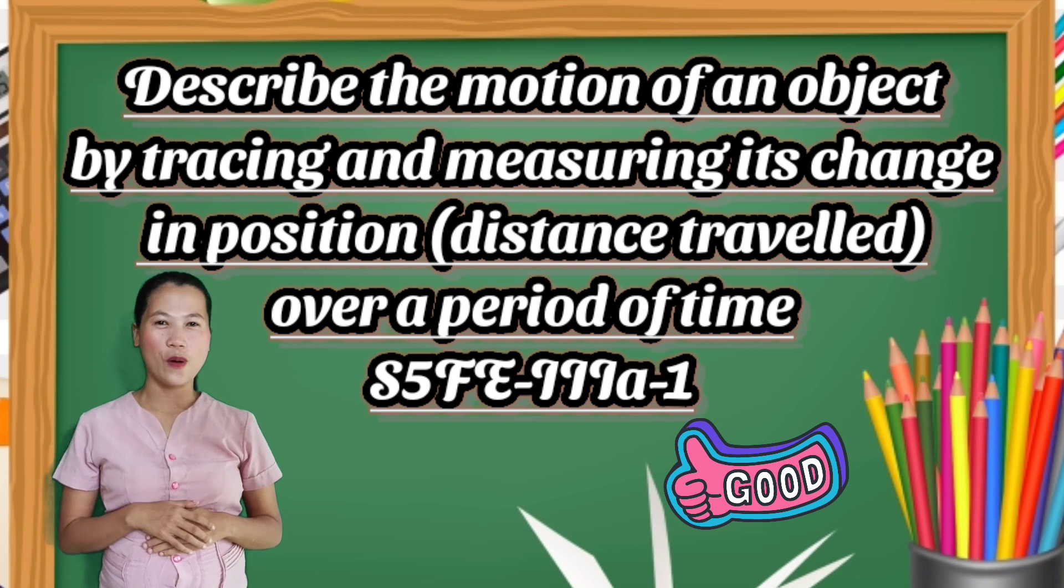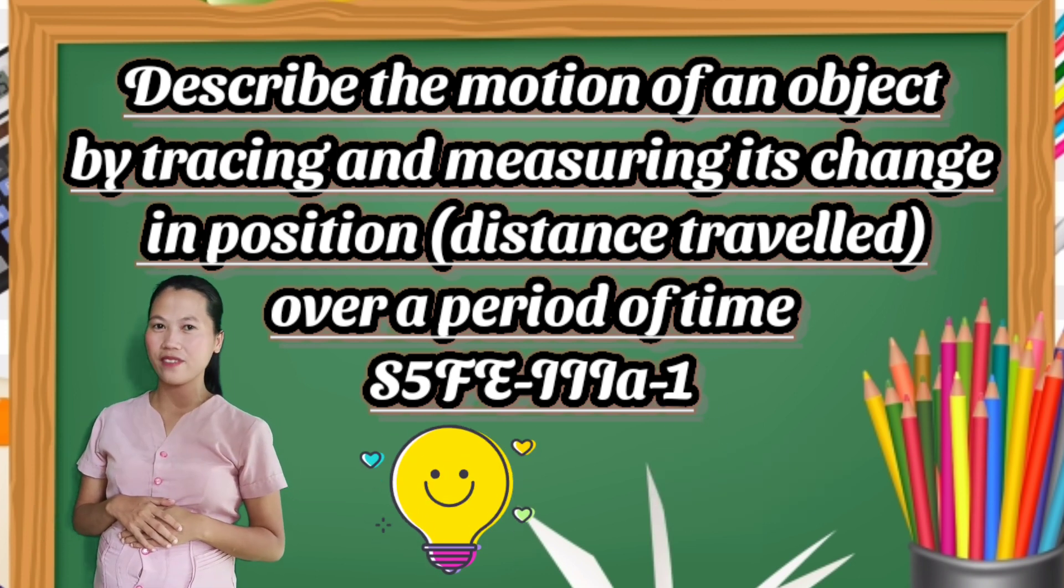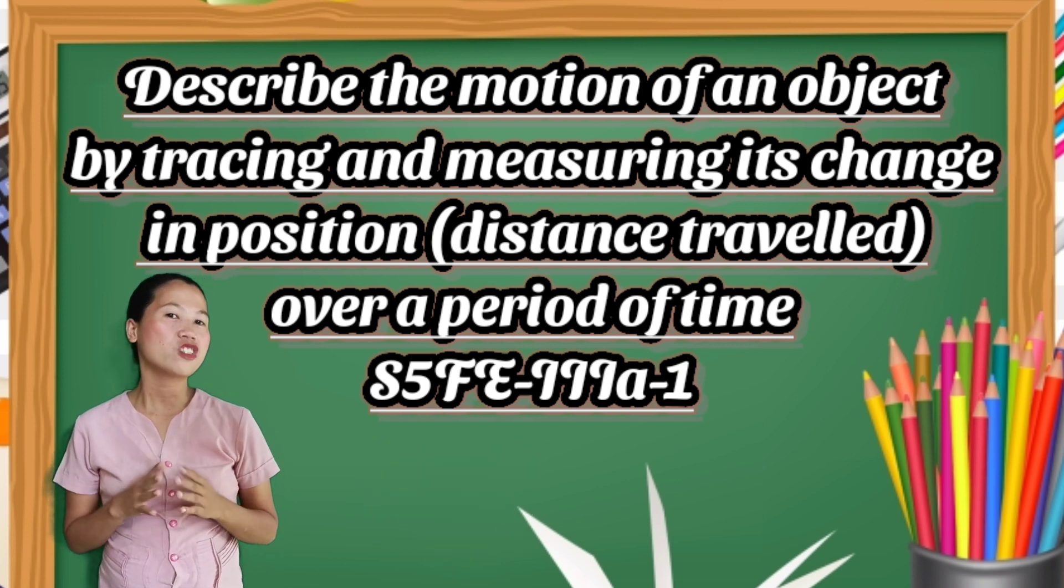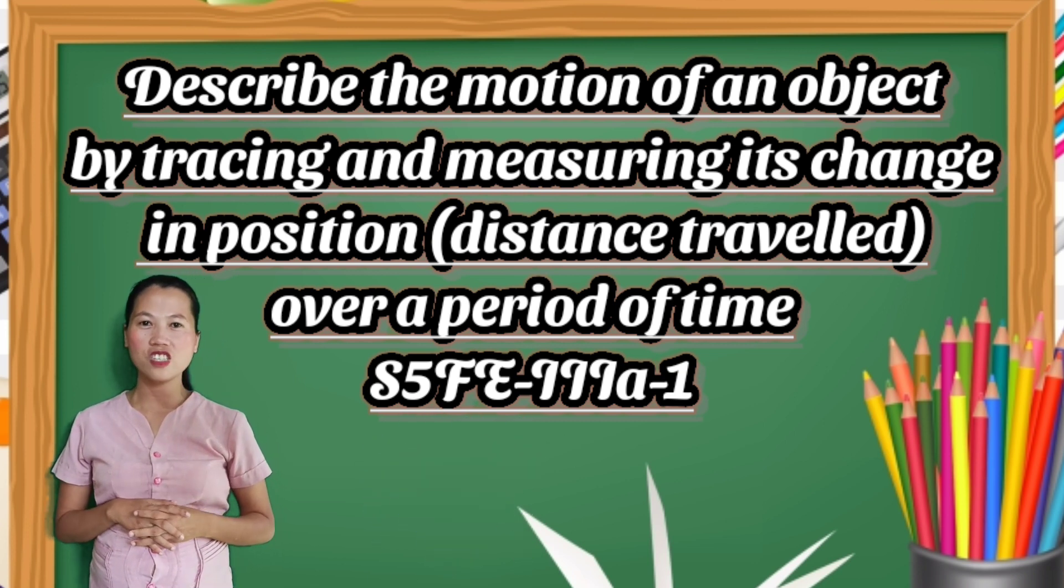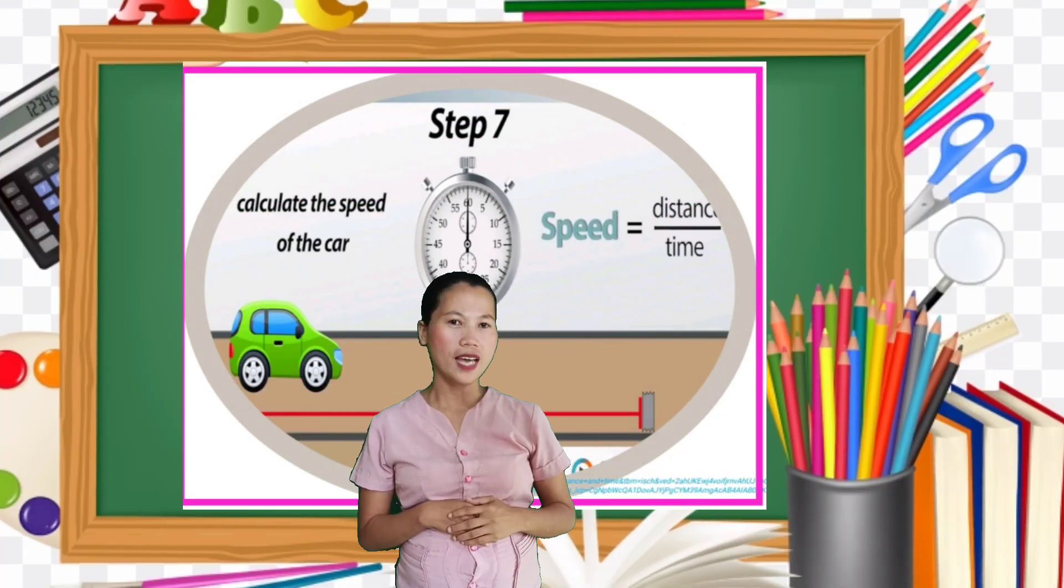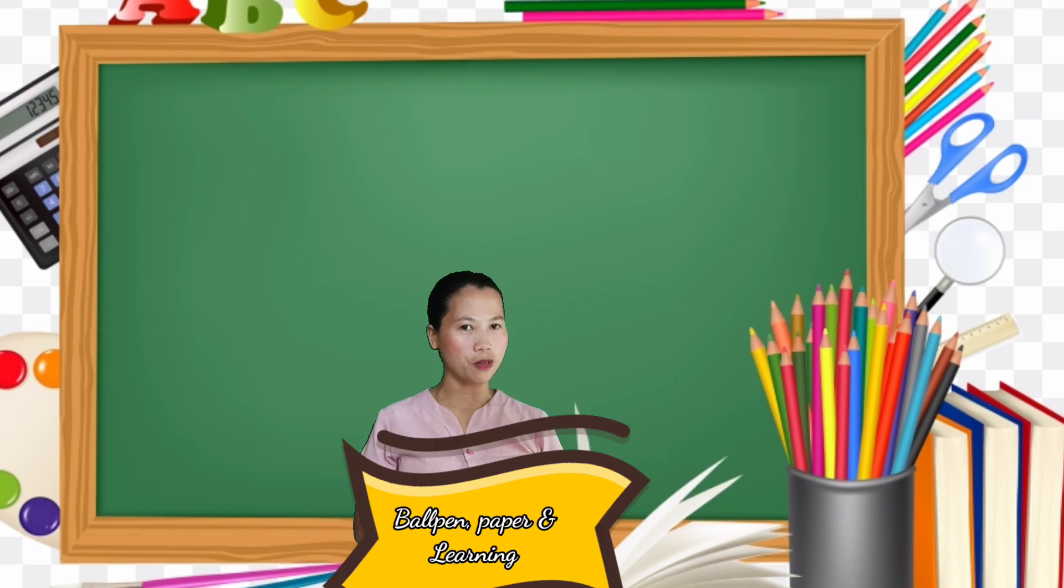Today we're going to learn and explore Science 5 about describing the motion of an object by tracing and measuring its change in position over a period of time. But before that, please prepare the following materials.